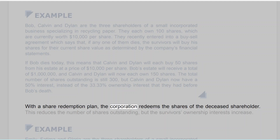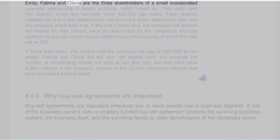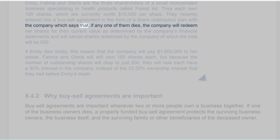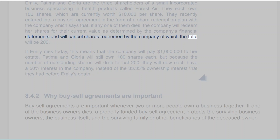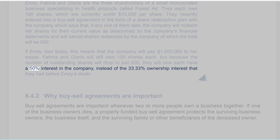With a share redemption plan, the corporation redeems the shares of the deceased shareholder. This reduces the number of shares outstanding, but the survivors' ownership interests increase. Example: Emily, Fatima and Gloria are the three shareholders of a small incorporated business specializing in health products called Forest Air. They each own 100 shares, currently worth $10,000 per share. They recently entered into a buy-sell agreement in the form of a share redemption plan which says that if any one of them dies, the company will redeem her shares for their current value and cancel the redeemed shares. If Emily dies today, the company will pay $1 million to her estate. Fatima and Gloria will still own 100 shares each, but because the number of outstanding shares drops to 200, they will now each have a 50% interest instead of the 33.33% they had before Emily's death.